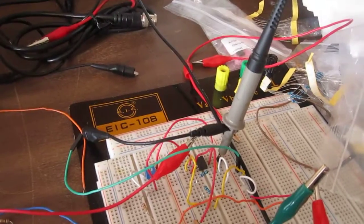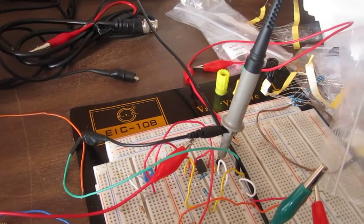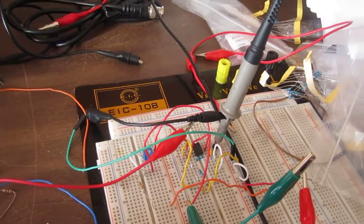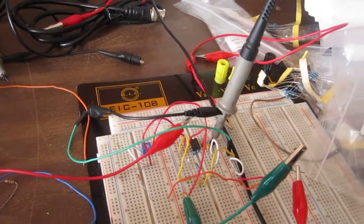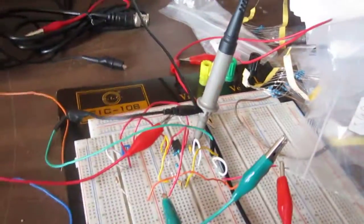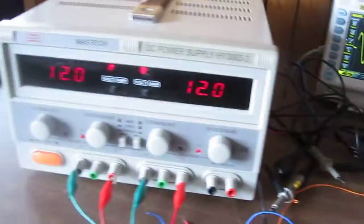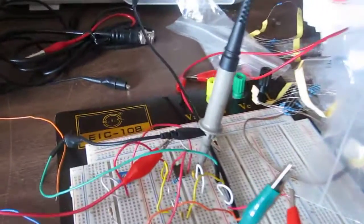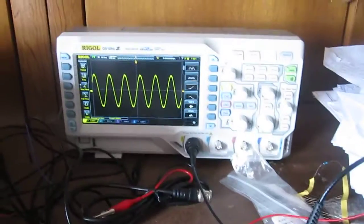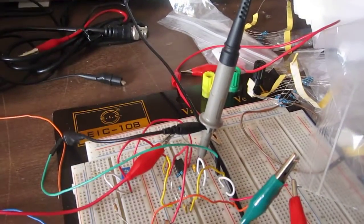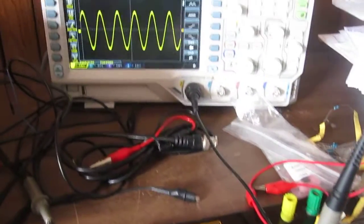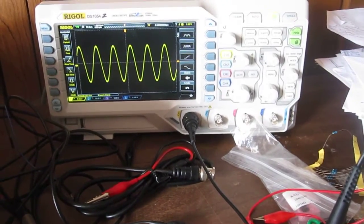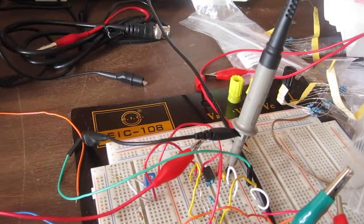So again, this is a 50k potentiometer. You can see all the values of the components at the link below that I provided. And I'm using 12 volts positive and negative to the LM741 so I can establish positive and negative rails. And that's all that's required in order to produce a sine wave using an LM741 chip.